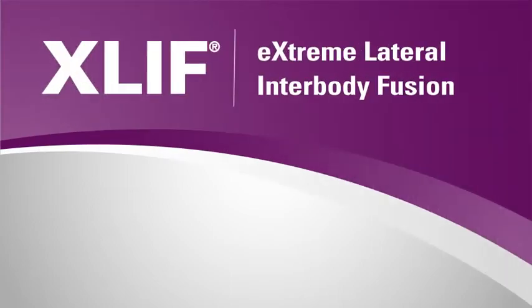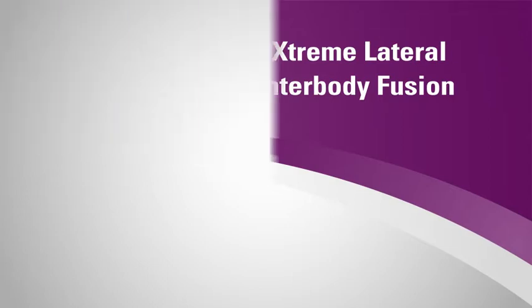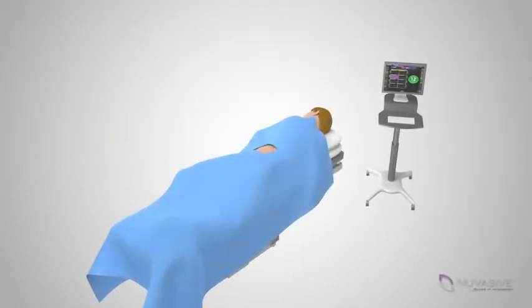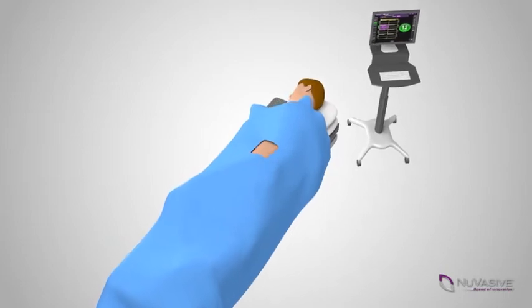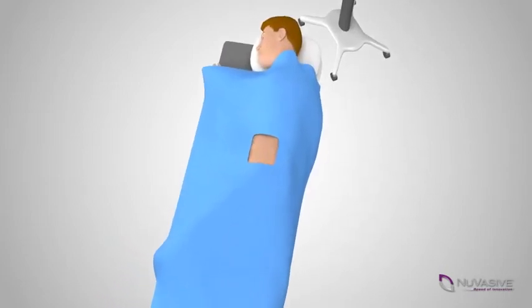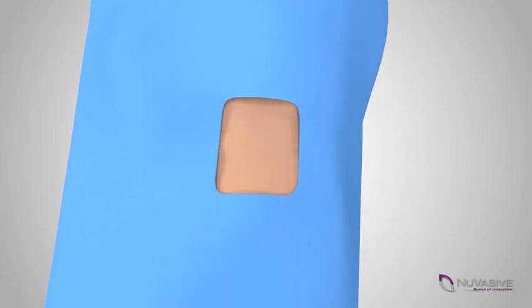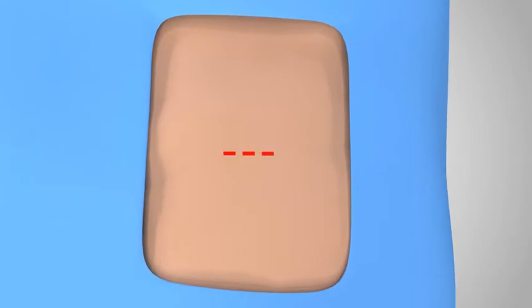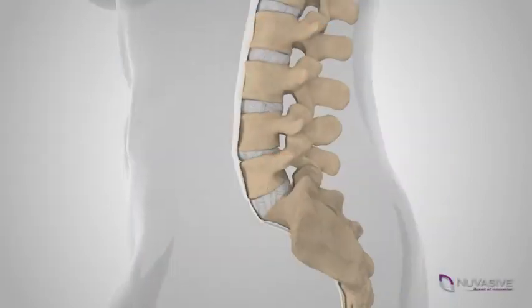XLIF, or Extreme Lateral Inner Body Fusion, is a minimally disruptive spinal fusion procedure. When undergoing an XLIF procedure, you will be placed on your side on a surgical table with appropriate surgical padding and draping. Your surgeon will make a small incision on the side of your body.